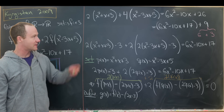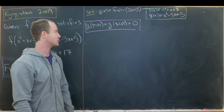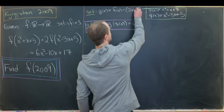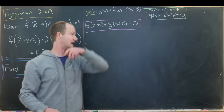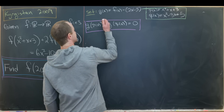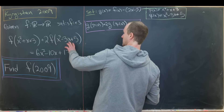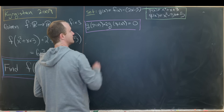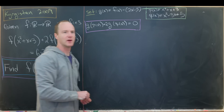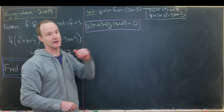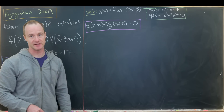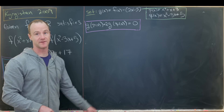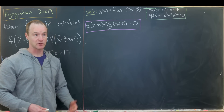Let's bring this information forward. We set g(x) = f(x) - 2(x - 3), and we defined p(x) and q(x). Our functional equation, which was complicated before, simplifies to g(p(x)) + 2·g(q(x)) = 0. We also noted that if we could find g(2009), we could find f(2009). So we'd like to find when p(x) or q(x) equals 2009.